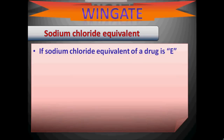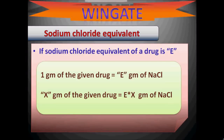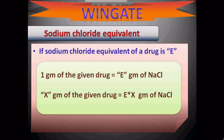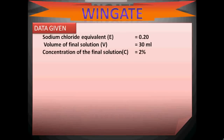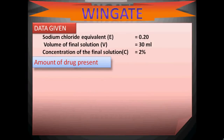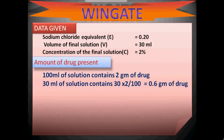According to the Sodium Chloride Equivalent method, if E is the NaCl equivalent of a drug, then X grams of the drug is equivalent to E × X grams of sodium chloride. Data given: E = 0.20, volume V = 30 ml, concentration = 2%. Since 100 ml contains 2 g of drug, 30 ml contains (30 × 2)/100 = 0.6 g of drug.